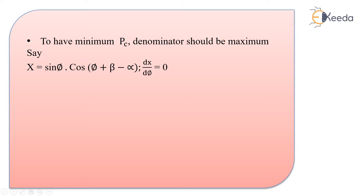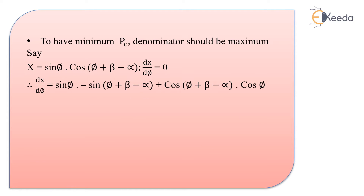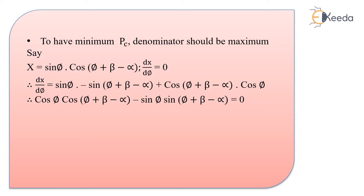Using the UV product rule with sin phi and cos of (phi plus beta minus alpha) as u and v: the derivative gives us sin phi into d/dphi of cos(phi plus beta minus alpha) plus cos(phi plus beta minus alpha) into d/dphi of sin phi. Setting this equal to zero gives: cos phi into cos(phi plus beta minus alpha) minus sin phi into sin(phi plus beta minus alpha) equals zero.